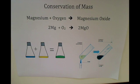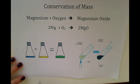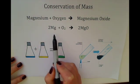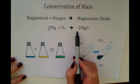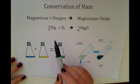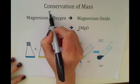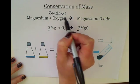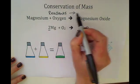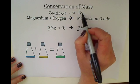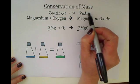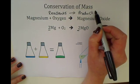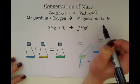This video is about the conservation of mass, which ties in to the idea of why it's important to balance equations — the mass of the reactants on the left hand side of the equation must equal the mass of the product or products on the right hand side of the equation.